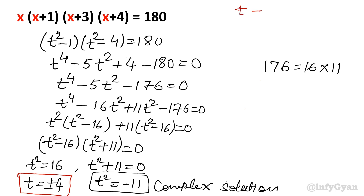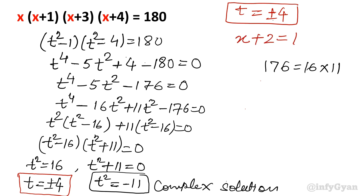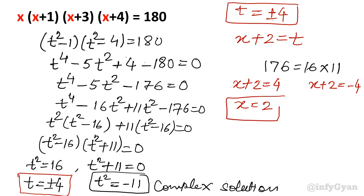Now we have t equal to plus or minus 4. Since we substituted x+2 = t, we find x. Taking t = +4: x+2 = 4, so x = 2. Taking t = −4: x+2 = −4, so x = −4−2 = −6.